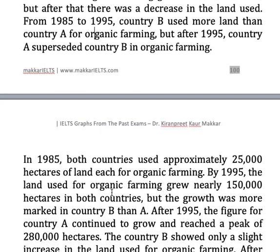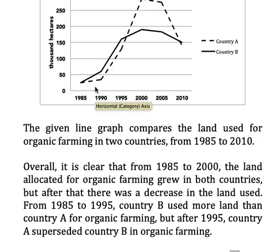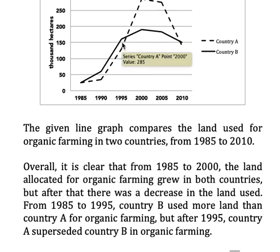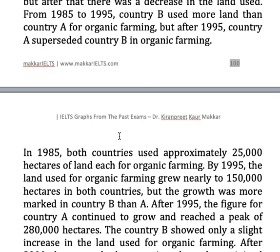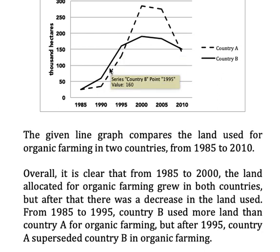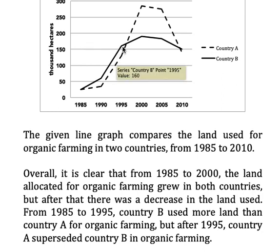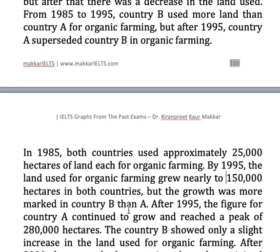By 1995, the land used for organic farming grew to nearly 150,000 hectares in both countries. You can see by 1995 this is about 160 and this is about 140, so I have written nearly 150,000 hectares in both countries. But the growth was more marked in country B than country A, as country A's line is always below the line drawn for country B.